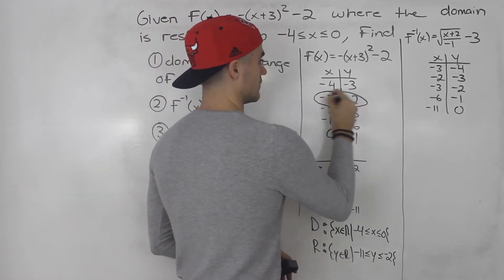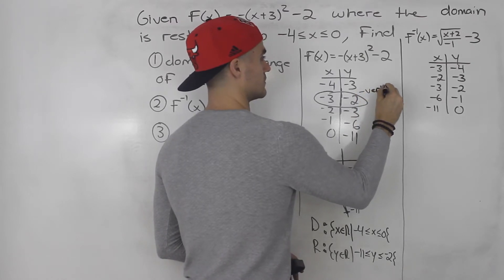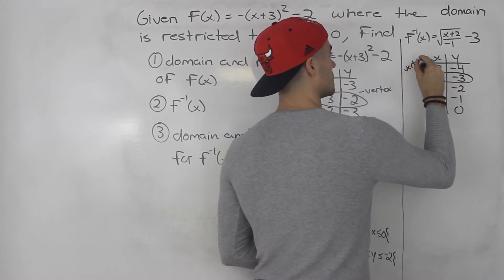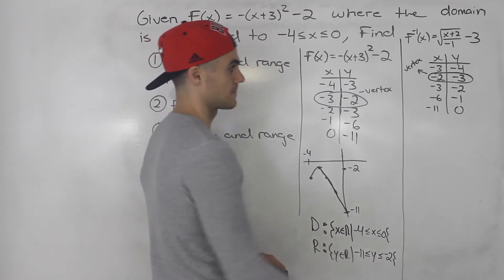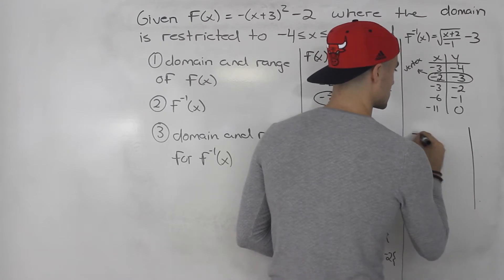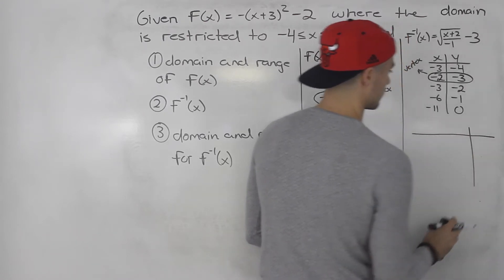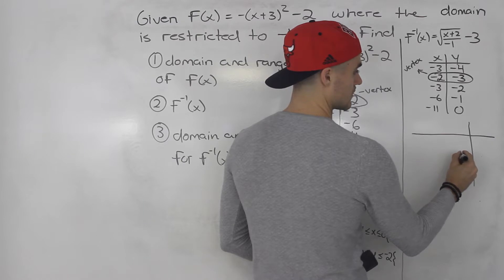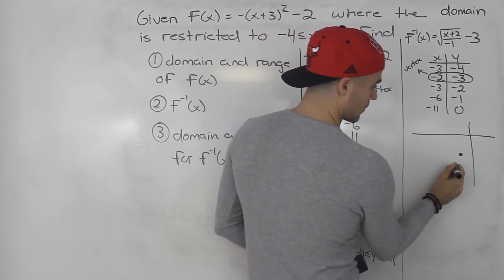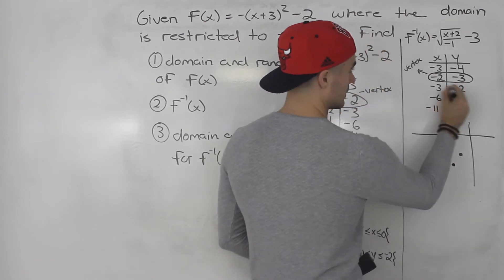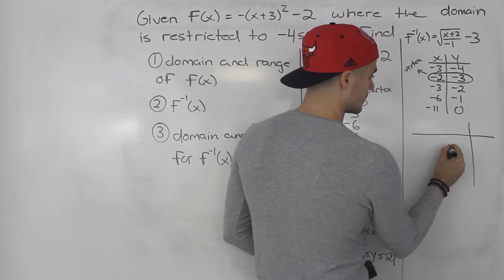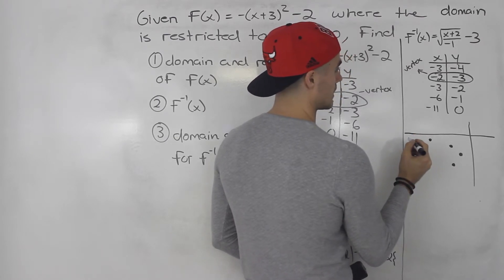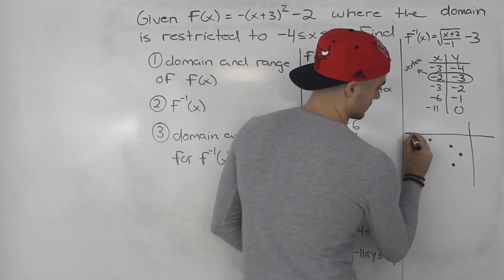I always like to label the vertex on the inverse as well. Even though it's going to be a sideways parabola, I like to know where that sideways parabola begins. The vertex of the inverse is at negative 2, negative 3. Let's draw out a graph: negative 2, negative 3 is over here; negative 3, negative 4 is here; negative 3, negative 2 is there; negative 6, negative 1 is here; and then negative 11 and 0 is there. Connecting all these gives us the sideways parabola.